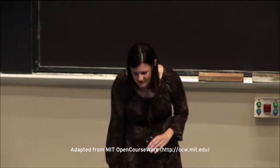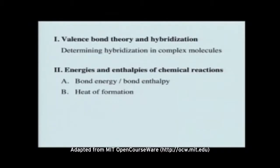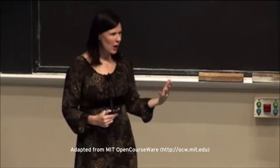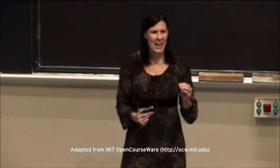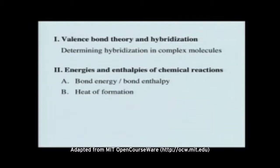Let's get to today's topics. We're going to finish talking about valence bond theory and hybridization. What we've already done is cover all the theory behind how hybridization and valence bond theory work, but what we haven't covered is how to actually solve problems quickly. So this is going to be a more practical lesson in hybridization. Once we do that, we'll move on to talking about energies and enthalpies of chemical reactions.